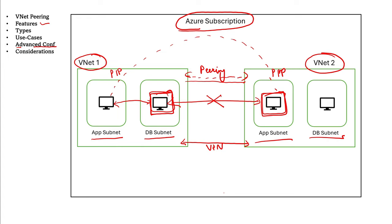There are mainly two types of virtual network peering: regional virtual network peering and global virtual network peering. When you peer two virtual networks that are in the same region, it's called regional virtual network peering. However, you can also peer virtual networks across different regions — that is called global virtual network peering. There will be some latency because the traffic travels between regions, and there will be a cost attached to it. But if you need to peer virtual networks across different regions, global virtual network peering can be used.